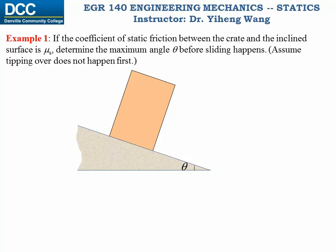Imagine there's a crate sitting on an inclined surface with angle theta. The coefficient of static friction between the crate and the surface is mu_s. From experience we know that if the angle theta is small or the surface is flat, the crate can stay static. However, if the angle theta is large or the surface is steep, then motion could happen — the crate could either tip over or slide down the surface.